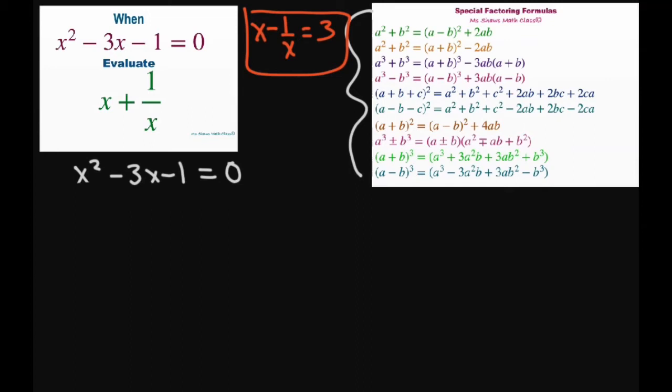So basically if I take (x + 1/x)², that's going to be this form right here. And that's going to equal (x - 1/x)² + 4ab. Now my ab is just 1 because that's your coefficients here. So that's just 1 × 1, which gives you 4.